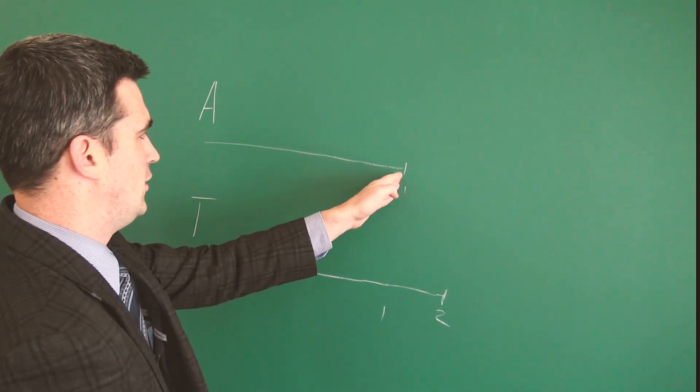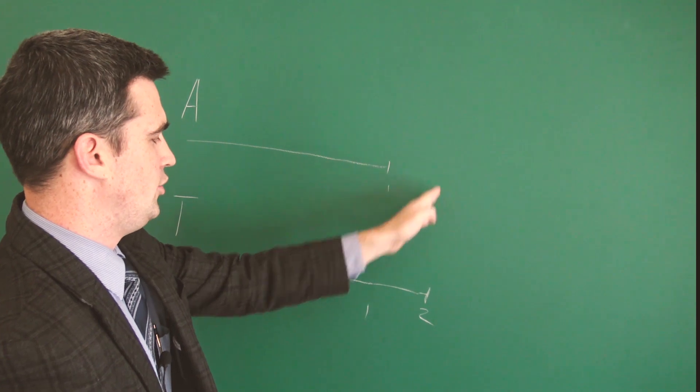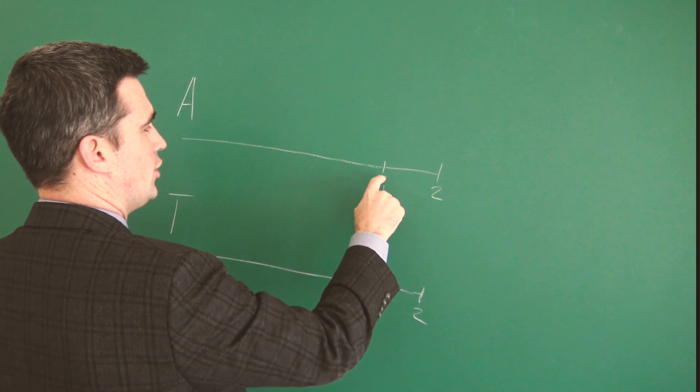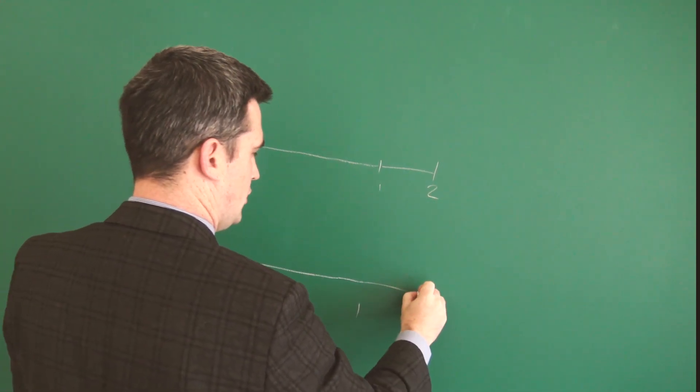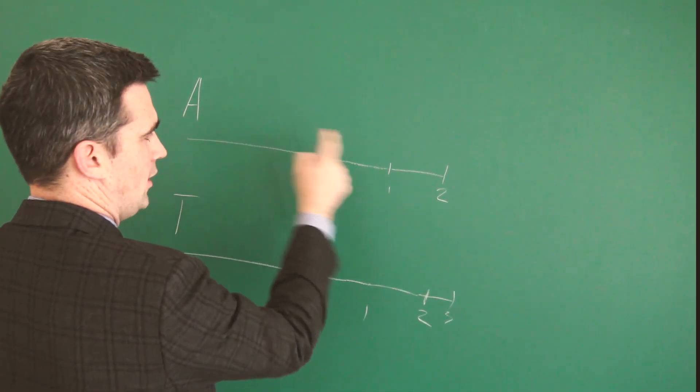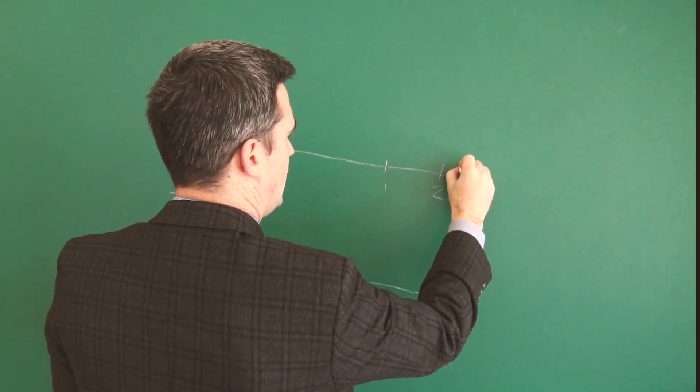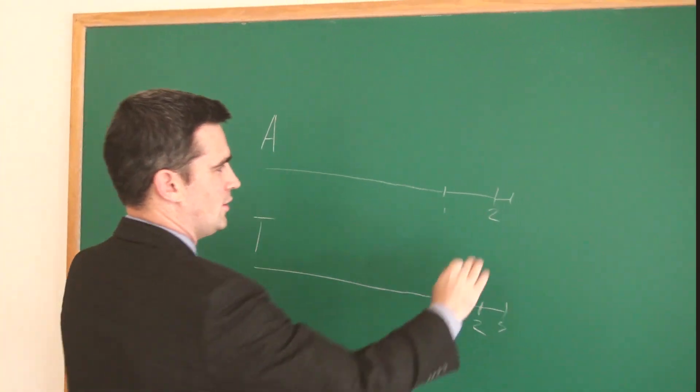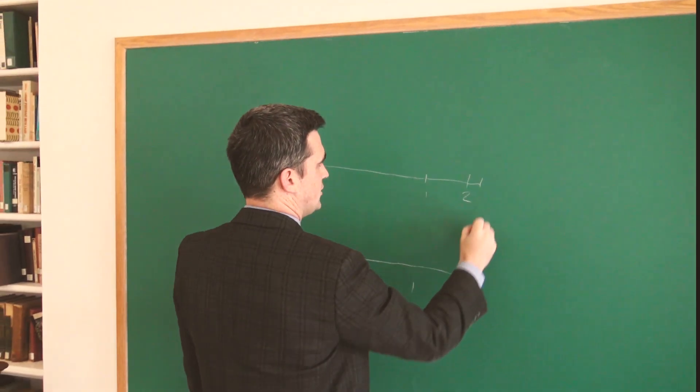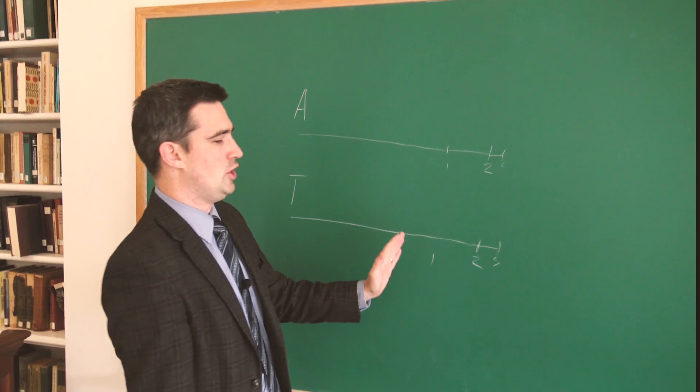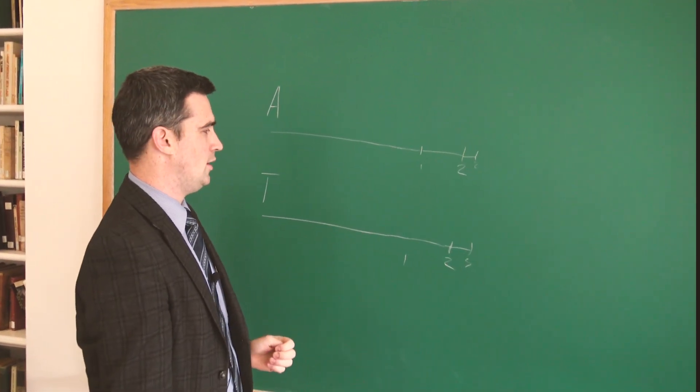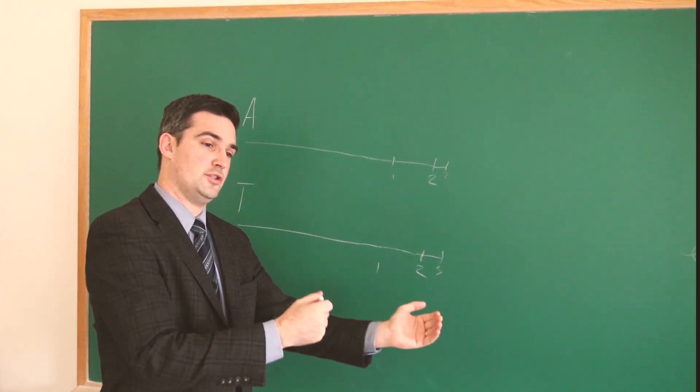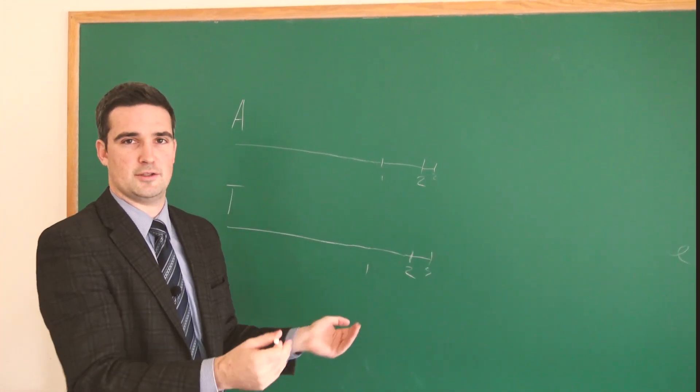And so we'll say, okay, well, after Achilles gets to point one, he has to get to point two. So he gets to point two. But in the time it took Achilles to get from one to two, the tortoise has gone a little further to point three. And then Achilles has to go from two to three and get there. The problem is, you can do this forever. And Achilles never catches the tortoise because the tortoise will always be a little bit farther ahead than Achilles. And you can do this as many times as you like.